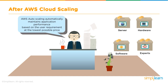After AWS autoscaling was introduced, it automatically maintains application performance based on user requirements at the lowest possible price. Whenever scalability is required, it manages it automatically, making cost optimization possible.